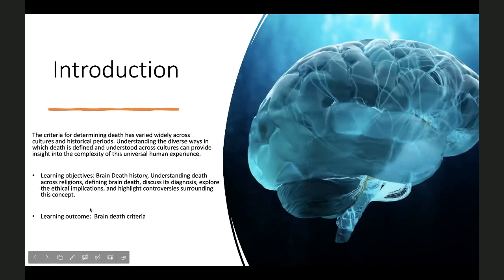Today's Grand Rounds will discuss the criteria for determining death, which has varied widely across cultures and historical periods. Understanding diverse ways death is defined provides insight into the complexity of this universal human experience. As the saying goes, only two things are certain in life: taxes and death. The learning objectives are brain death history, understanding death across religions, defining brain death, discussing its diagnosis, exploring ethical implications, and highlighting controversies surrounding this concept.